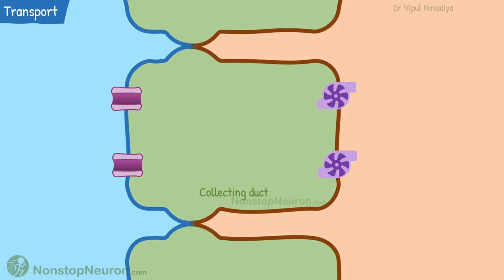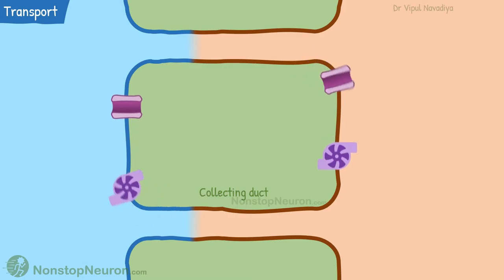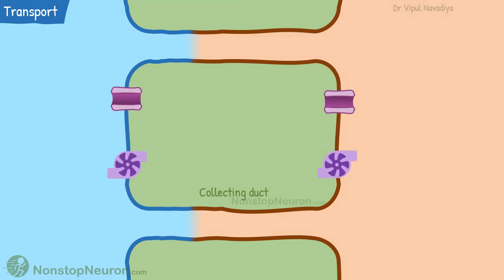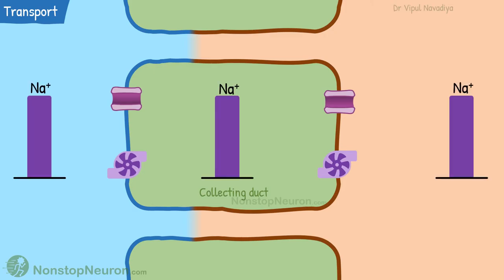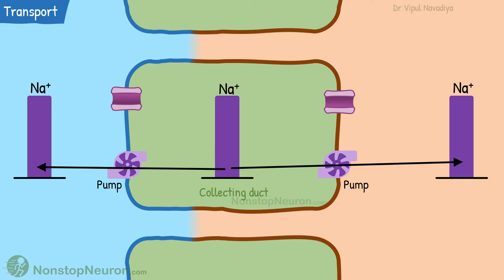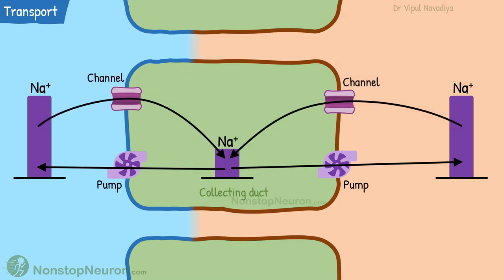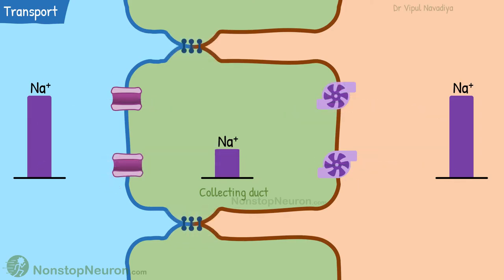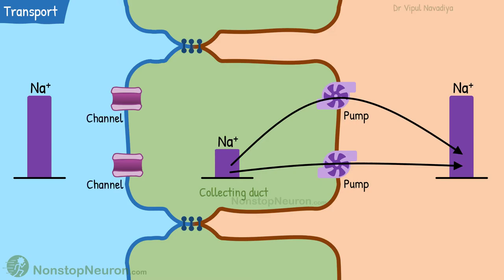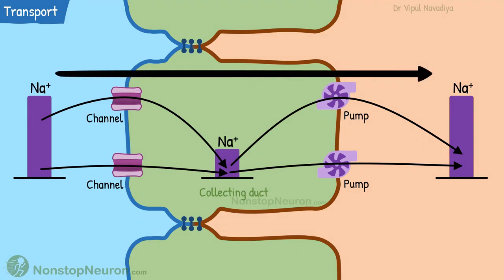Now let's see what would happen if tight junctions were not there. In that case, all the transport proteins would spread all over the membrane, so we would have all types of transporters on both sides. The sodium-potassium pump would move sodium out on both sides, which does decrease sodium concentration inside the cell, but then it diffuses into the cell from both sides. Now look at the overall movement — sodium is moving round and round. Although the transport proteins are doing their work, there is no net movement in any direction; they are just wasting energy. Luckily, junctions prevent this mixing. So the basolateral membrane has only pumps that extrude sodium into the interstitium, and the luminal membrane has only channels through which sodium enters the cell, giving us net movement of sodium in the desired direction.